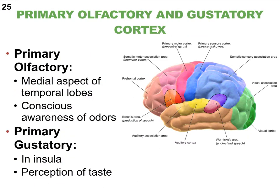I also forgot to mention smell — there's a primary olfactory area somewhat located in your temporal lobes, and the primary gustatory area for taste. Gustatory comes from 'gustare' in Latin, meaning to taste — just like 'me gusta' in Spanish means I like it. Notice that taste is an example of a special sense received in the insular lobe.